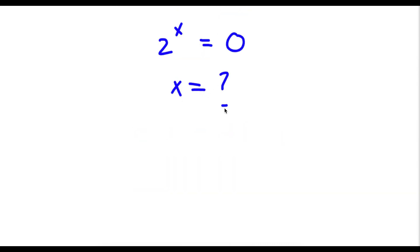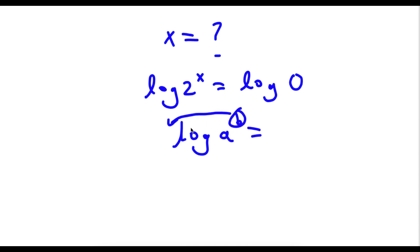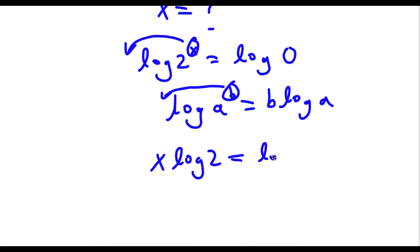Now I want to find the value of x for 2 to the power of x equals 0. First off, I'm going to take the log on both sides. So now I have log 2 to the power of x is equal to log 0. If I have something in the form log a to the power of b, I can move this exponent b to the front. So in this case, x times log 2 is equal to log 0.